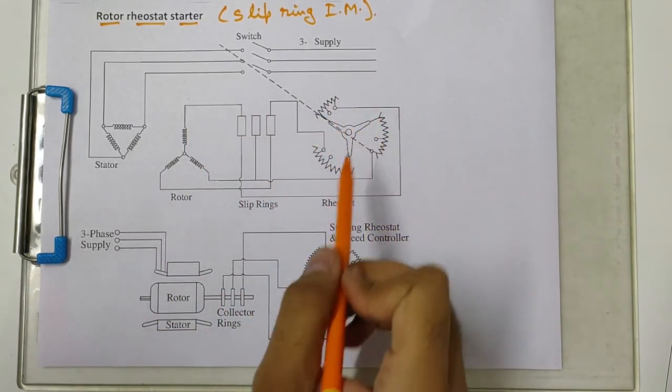Through the slip rings we are adding the resistance in the rotor circuit, so we are increasing the rotor resistance. Suppose the rotor resistance in first case was r2 and the reactance is x2.